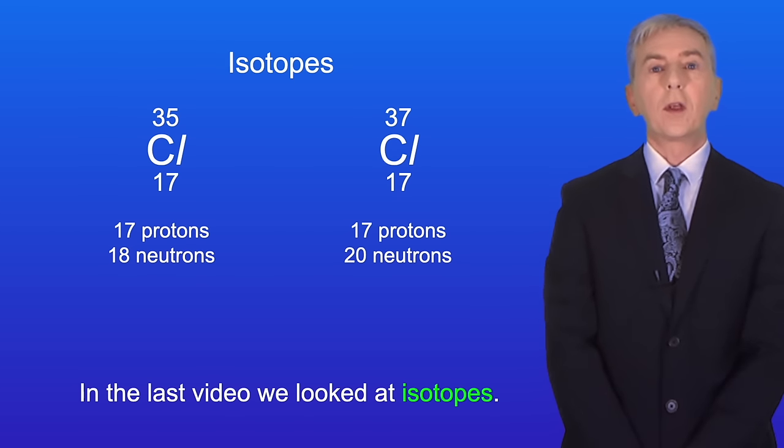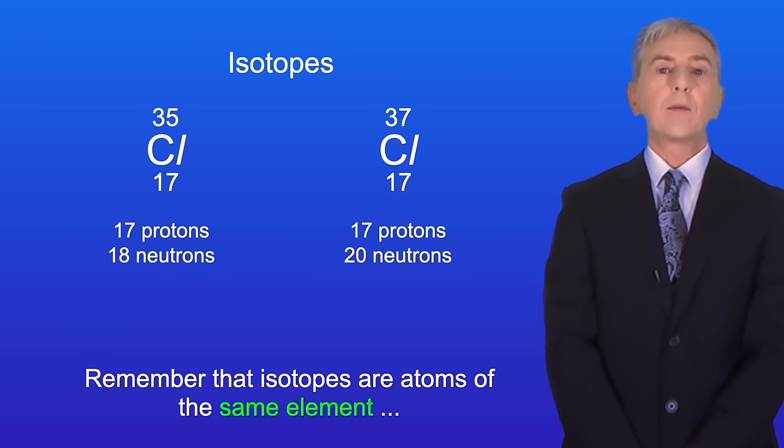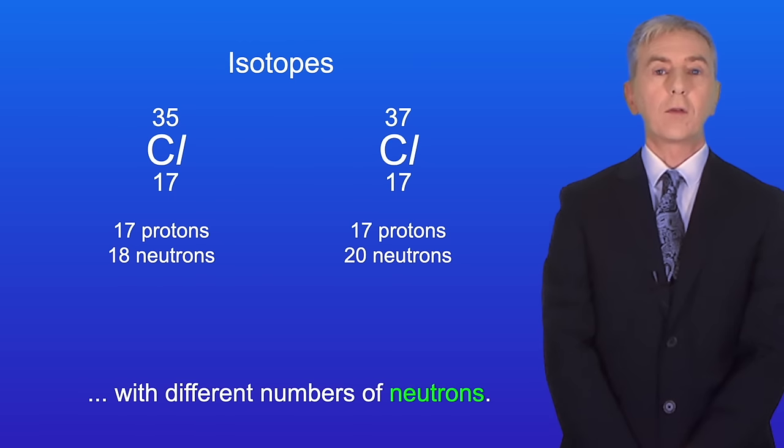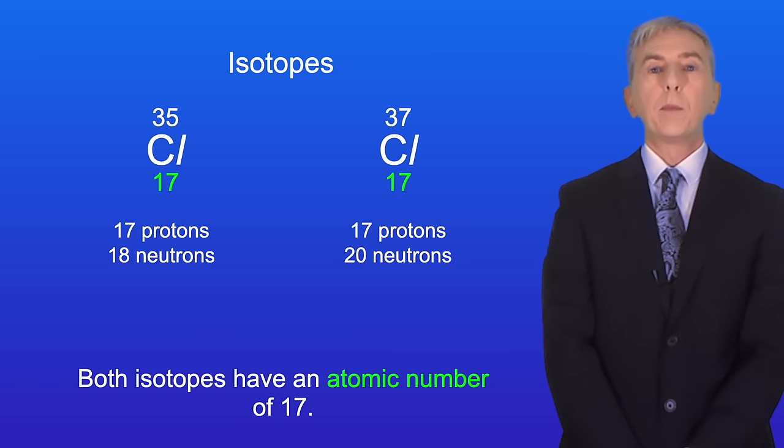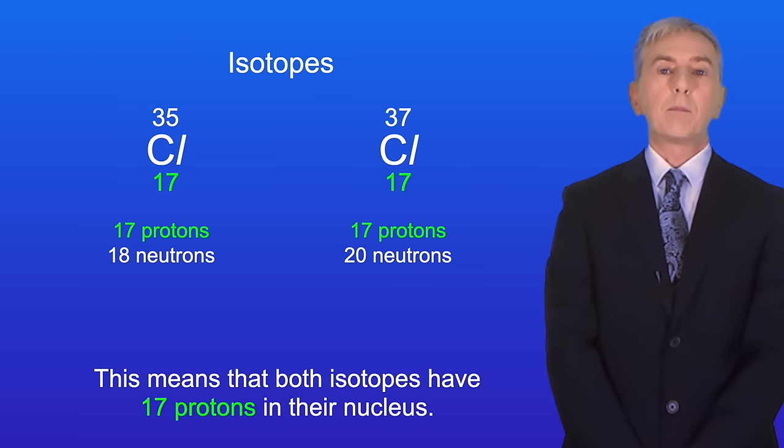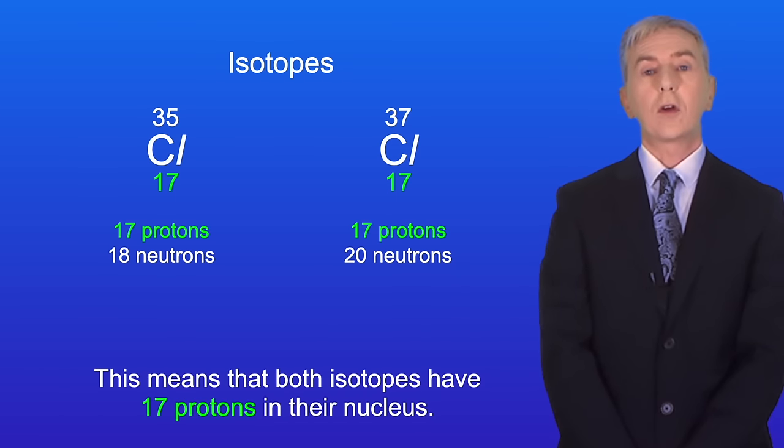In the last video we looked at isotopes. Remember that isotopes are atoms of the same element with different numbers of neutrons. I'm showing you here the isotopes for the element chlorine. Both isotopes have an atomic number of 17. This means that both isotopes have 17 protons in their nucleus.